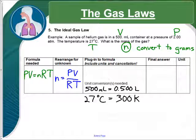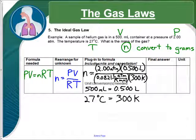Now, we can plug in all of our numbers. N equals 2.00 atmospheres times 0.500 liters divided by R, our constant, times 300 Kelvin. So, when we do the math here, we get 0.0406 moles of helium.